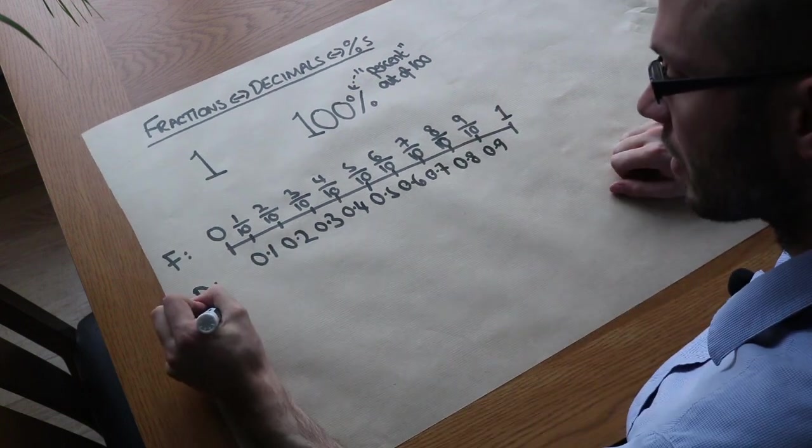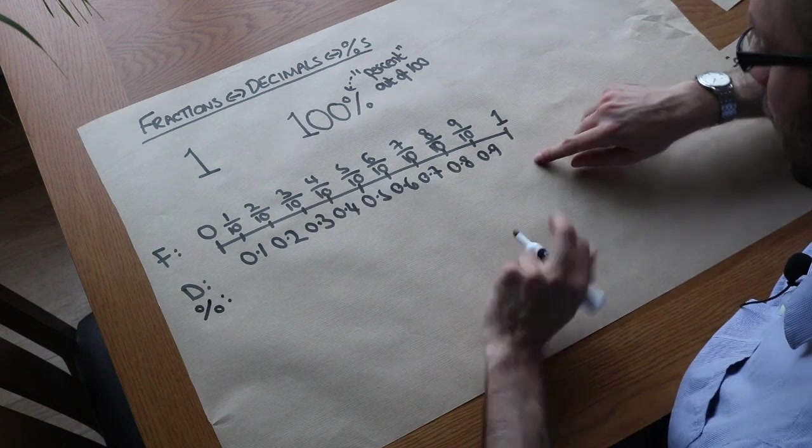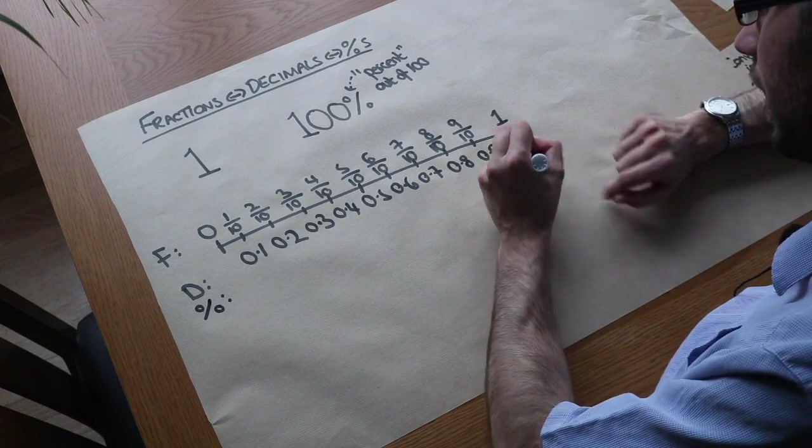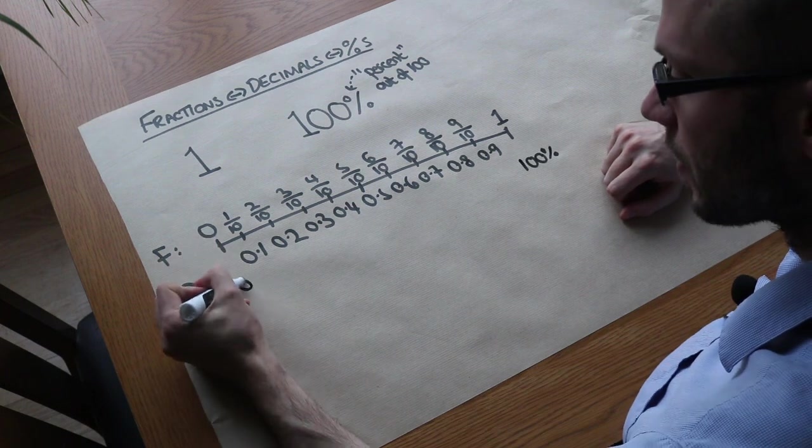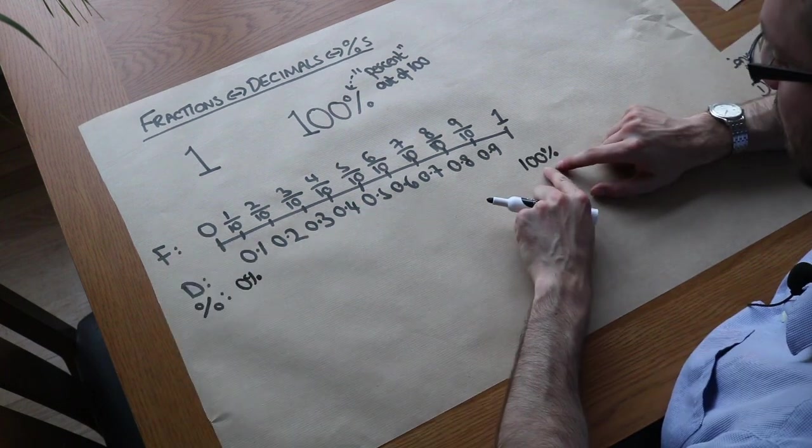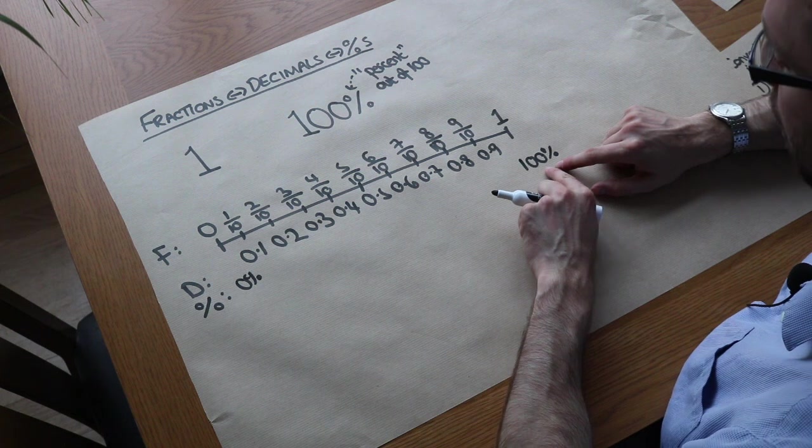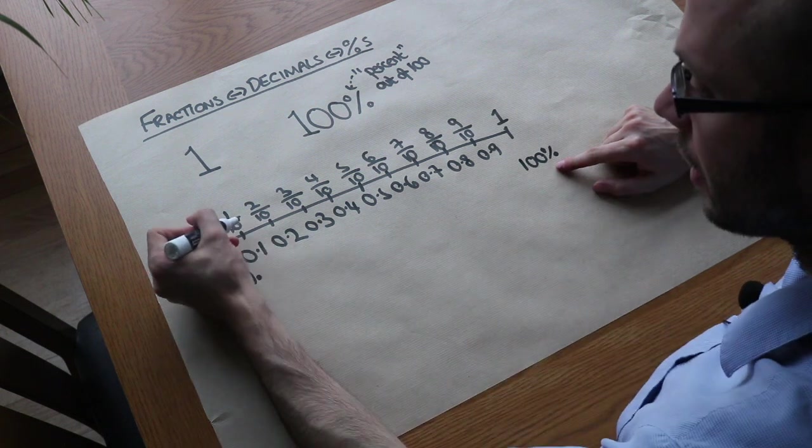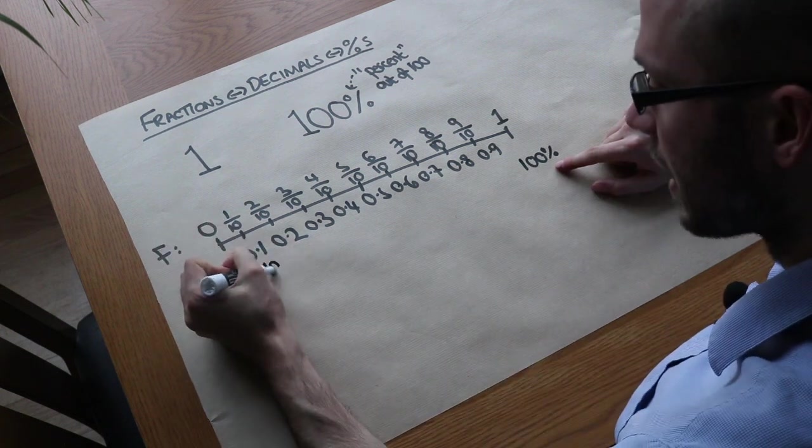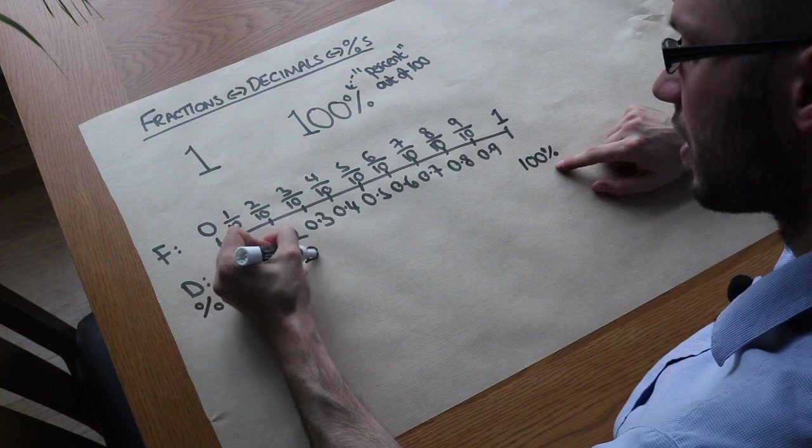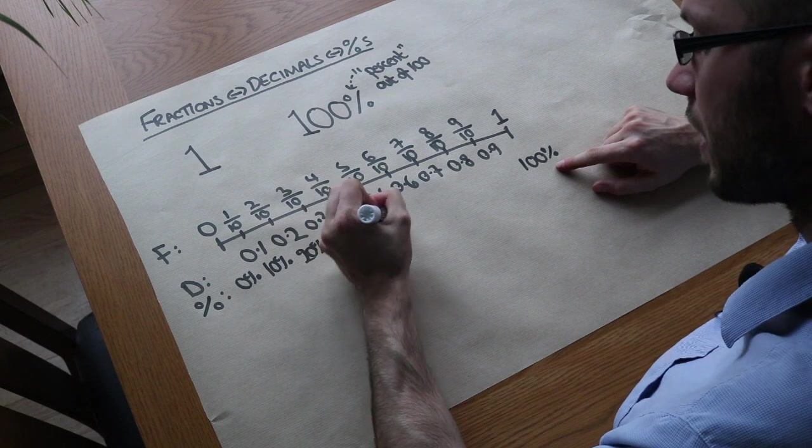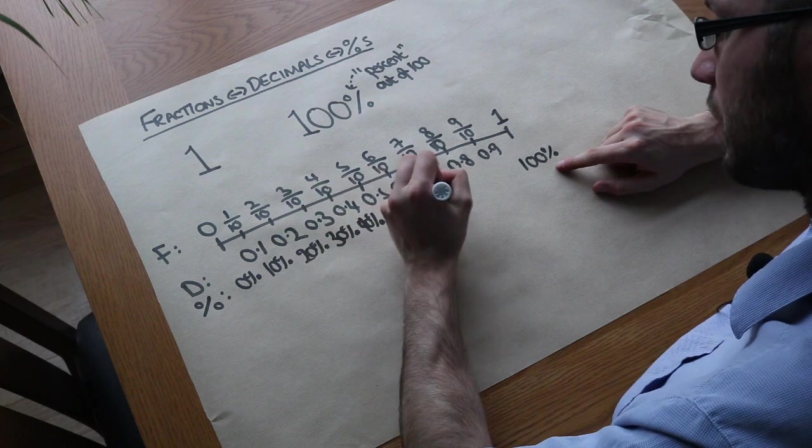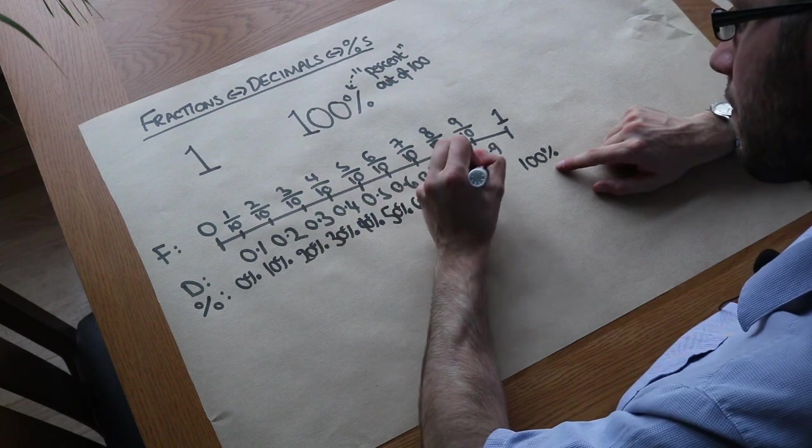Now what about as percentages? Well we know at the extreme, this is 100% over here, and that's 0%. So if we split 100% into 10 pieces, 100 divided by 10 is 10, so therefore this must be 10%, 20%, 30%, 40%, 50%, 60%, 70%, 80%, and